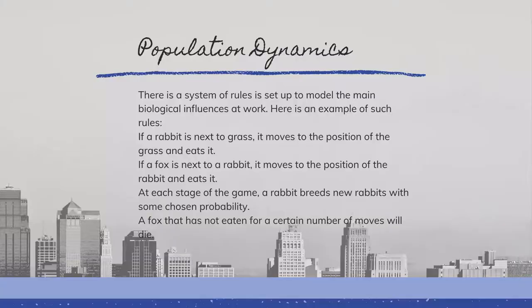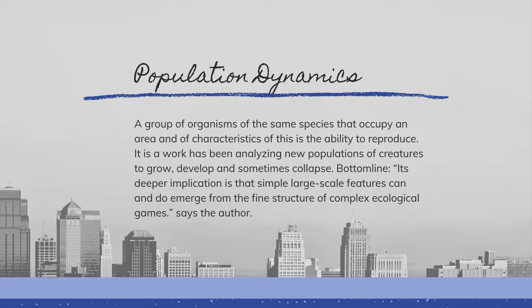The second example is population dynamics. As referred to on page 132, it reflects a long tradition of mathematical modeling in which the changes in populations of creatures are represented by differential equations. There is a system of rules set up to model the main biological influences at work. Here is an example of such rules: if a rabbit is next to grass, it moves to the position of the grass and eats it; if a fox is next to a rabbit, it moves to the position of the rabbit and eats it. At each stage of the game, a rabbit breeds new rabbits with some chosen probability; a fox that has not eaten for a certain number of moves will die. This work has been analyzing how new populations of creatures grow, develop, and sometimes collapse.